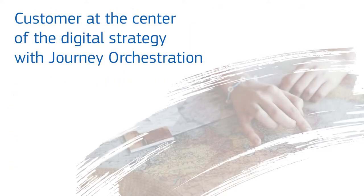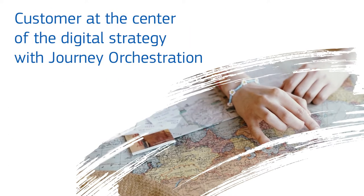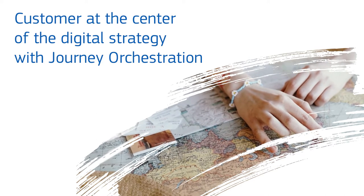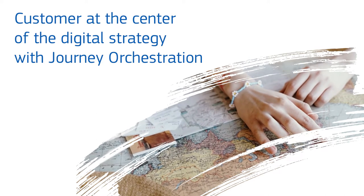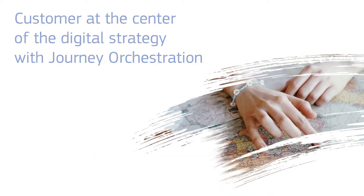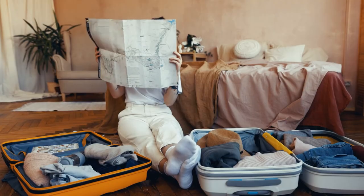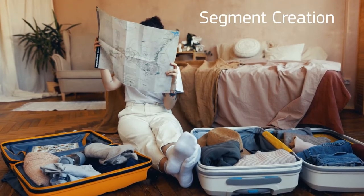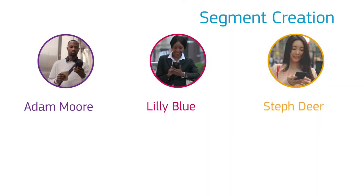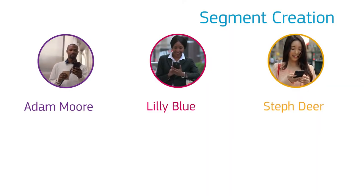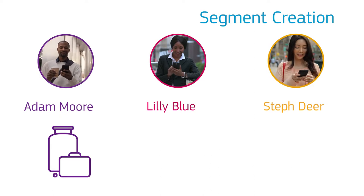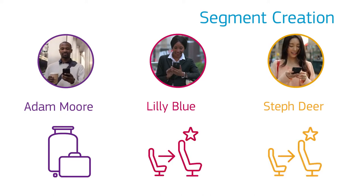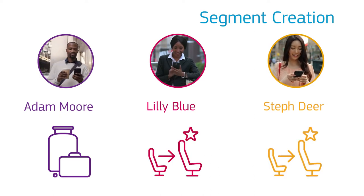Let's see how Horizon can use journey orchestration to put the customer at the centre of their digital strategy. The journey starts by creating segments to send the right message to the right traveller. First, we segment the travellers according to their preferred ancillary service — Adam Moore with a bag, and Lily and Steph with the extra legroom seat.